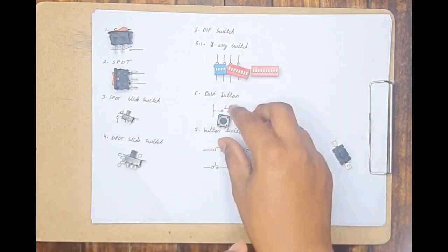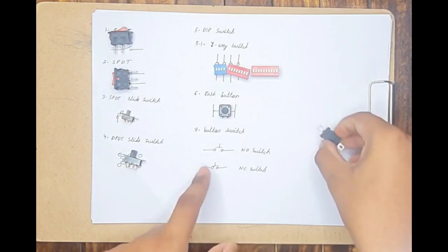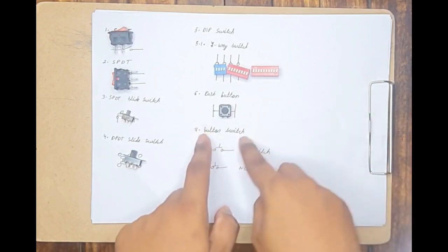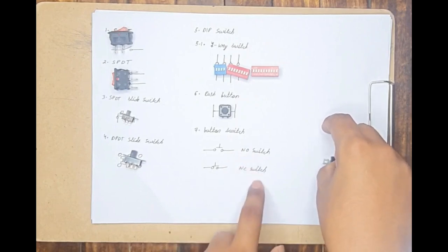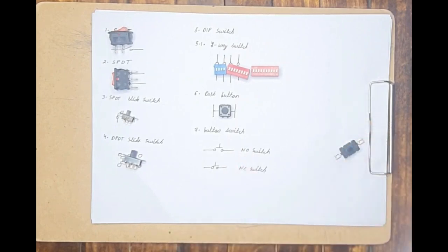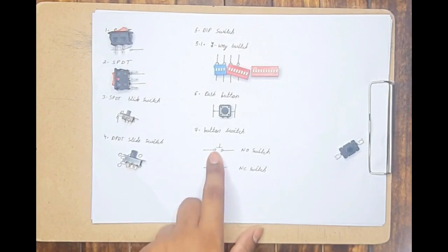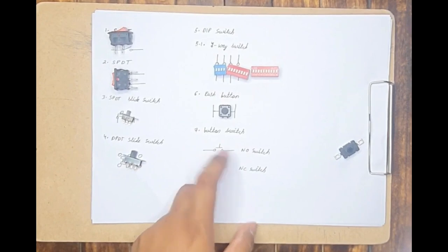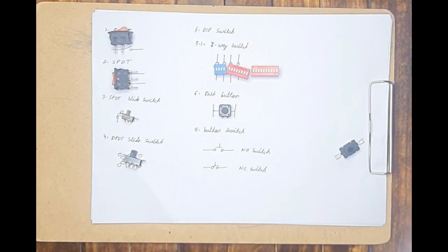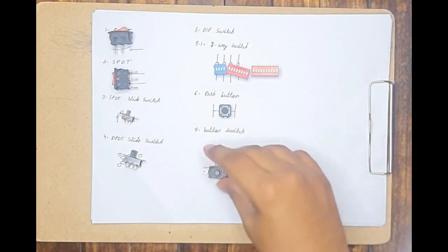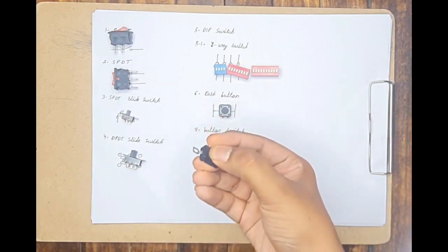Once we are releasing the button the switch will be in open state again. The next type of switch we will mostly use is a button switch. There are two types: a normally open switch and a normally closed switch. A normally open switch means in general it will be in open state — only when the button is pressed will it be in closed state, and once released it goes to open state again. A normally closed switch means when you buy the switch it will be in closed state by default, but if you press the button it will be in open state. The switch I am showing here is a normally closed switch — the moment the button is pressed it will be in open state.